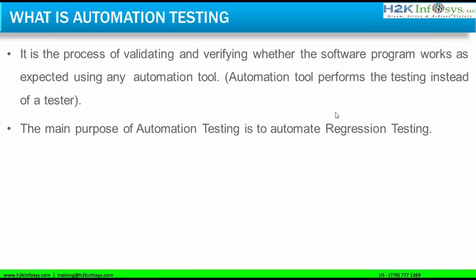Automation testing is the process of validating and verifying whether software programs work as expected using an automation tool. The automation tool we are going to use is Selenium. The main purpose of automation testing is to automate regression testing. What is regression testing?